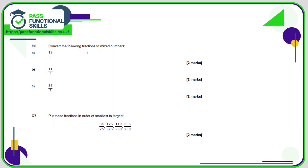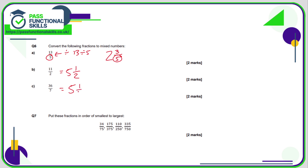Question six: converting fractions into mixed numbers. The line in a fraction means divide, so thirteen over five is thirteen divided by five. Five goes into thirteen twice with a remainder of three, so the answer is two and three fifths. Eleven over two: two goes into eleven five times with one remaining — five and a half. Thirty-six sevenths: seven goes into thirty-six five times with one left over — five and one seventh.